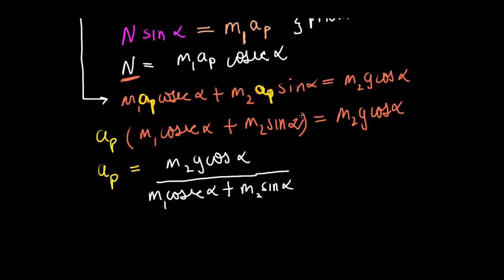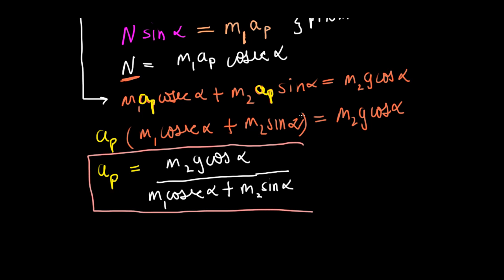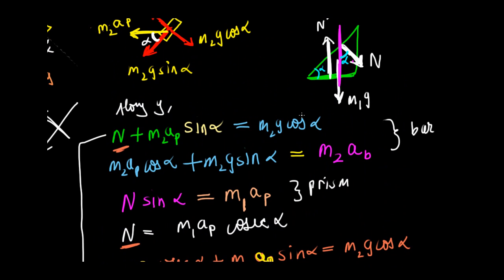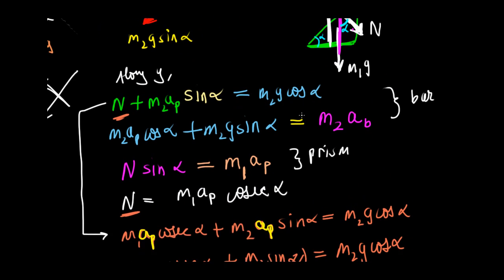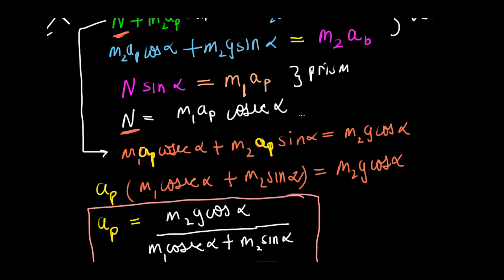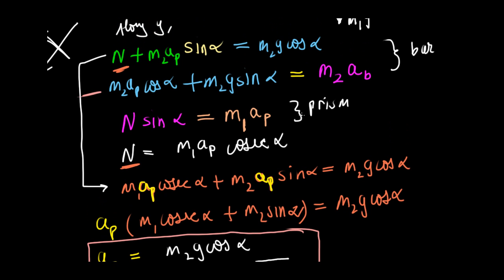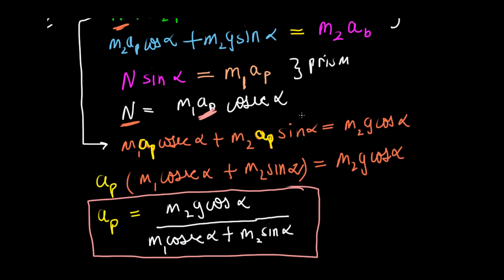We needed to find the acceleration of the prism, and now we have it. If we wanted to, we could find the acceleration of the bar as well as the normal force between these bodies. That could be done easily by substituting the value of AP we just got into the second equation to get AB, and substituting into the prism equation to get N. But since they haven't asked us, we won't do that.